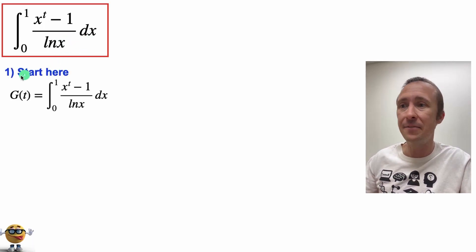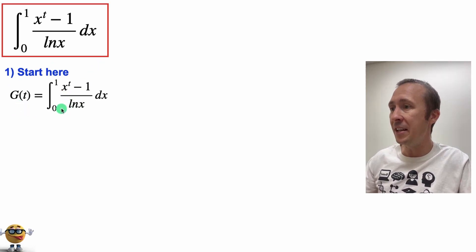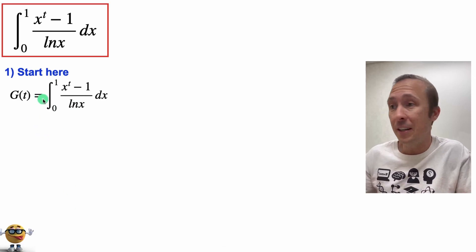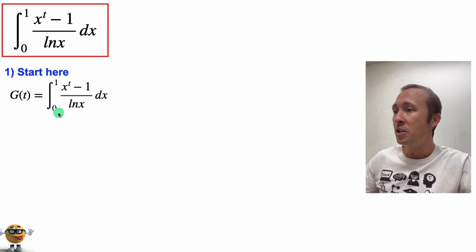So first thing we're going to do is define this function as a function of t because after we evaluate the integral x will be gone because of the limits and we'll be left with a function of t. So what we want to solve for is G(t).